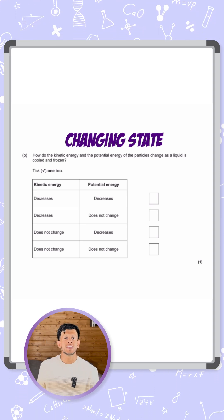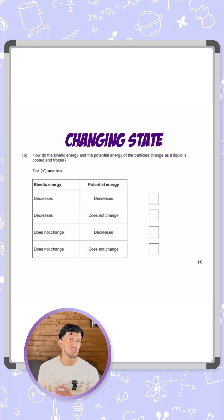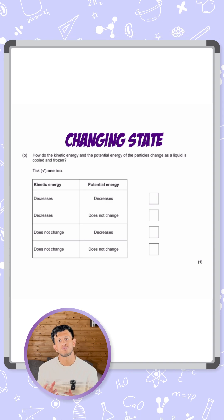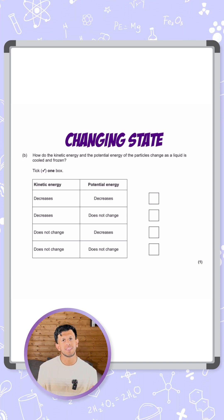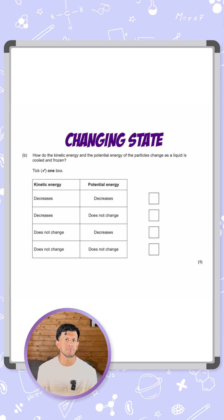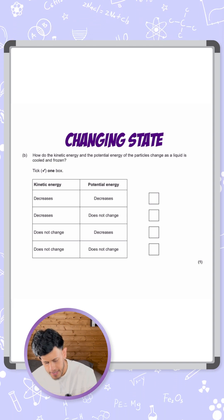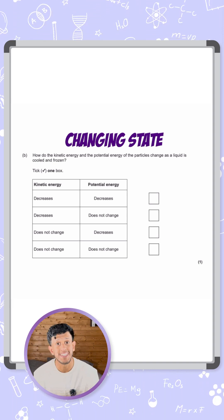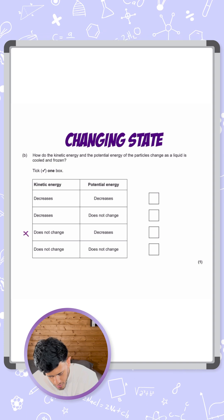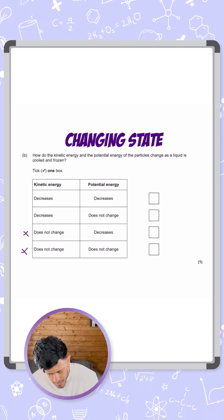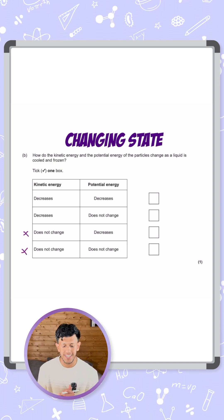If a particle is changing from liquid and being frozen, it means it's turning into a solid. Particles move more freely when they're a liquid and are more rigid when they're a solid, so their movement becomes less as a solid — meaning their kinetic energy decreases. This rules out the bottom two answers, leaving us with the top two, which are the only ones that say kinetic energy decreases.